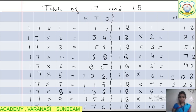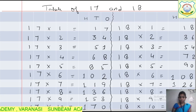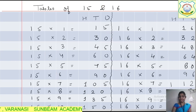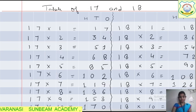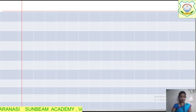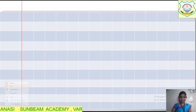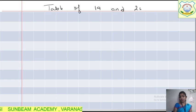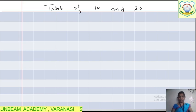Write it properly. Always remember: on one page you write two tables. We have written the index first, then table of 15 and 16, then table of 17 and 18. Now on a new page we are going to write the table of 19 and 20. Today's work is also to learn the tables. Homework: learn the tables.